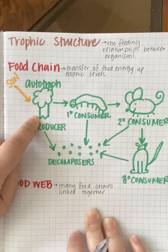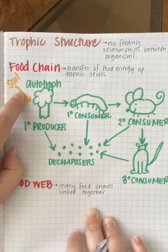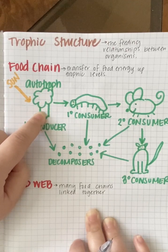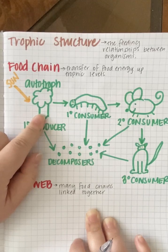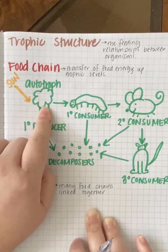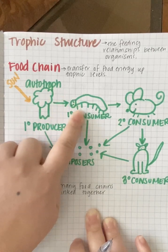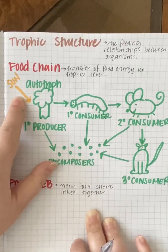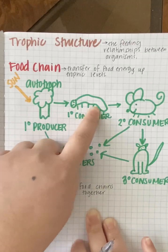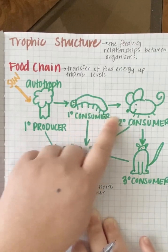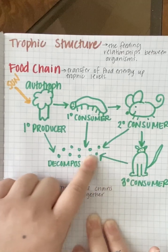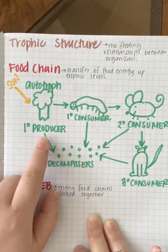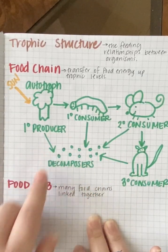For example, if 100 joules of energy come into an autotroph, only 10% gets stored — so only 10 joules. The rest is lost as heat. If that autotroph is consumed, only 10% transfers, so from 100 joules we get 10 joules stored here, then 1 joule, then 0.1 joule, then 0.01 joule. Decomposers can get different amounts depending on which organism they're decomposing.